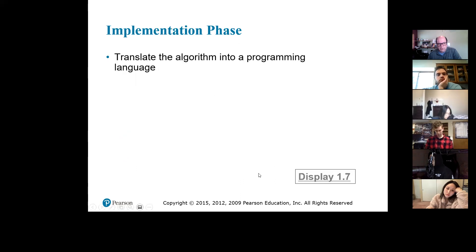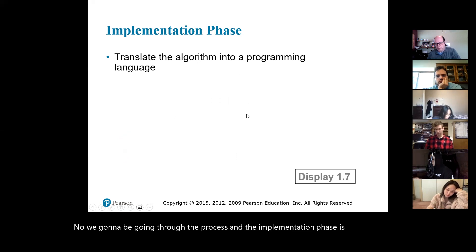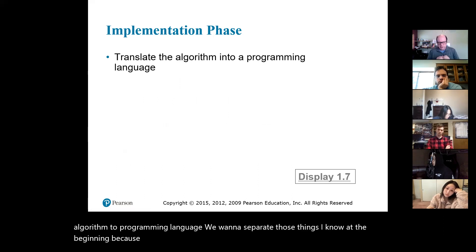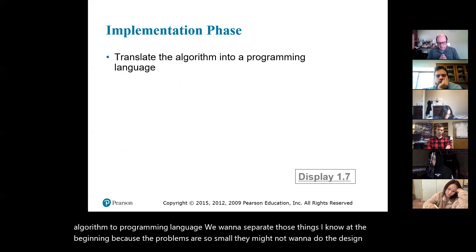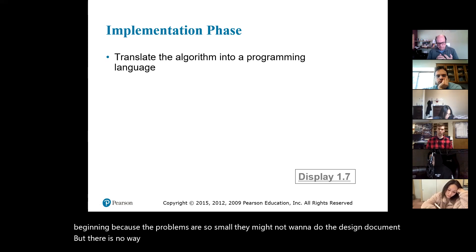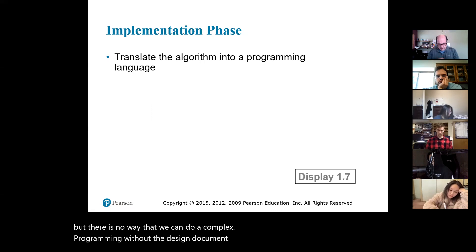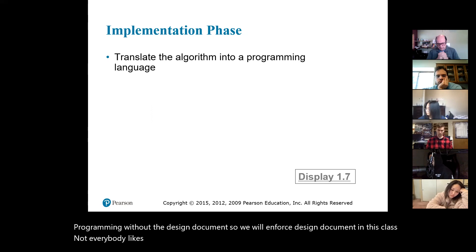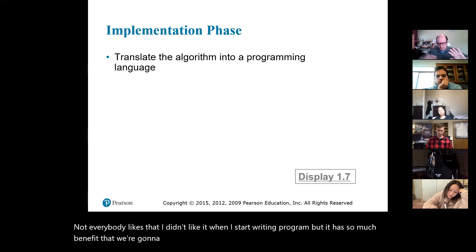Now we're going to go through the process. The implementation phase is to translate the algorithm to a programming language. We want to separate those things. At the beginning, because the problems are so small, students might not want to do the design document. But there is no way we can do complex programming without a design document, so we will enforce it in this class. It has so much benefit — we separate our thinking and our coding so we don't mix them up.